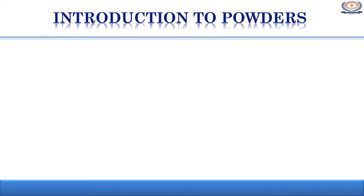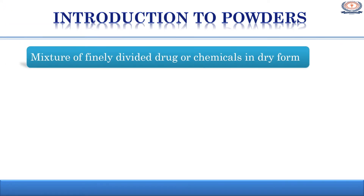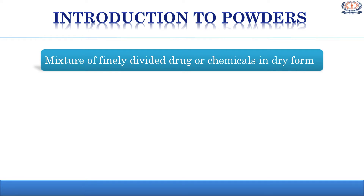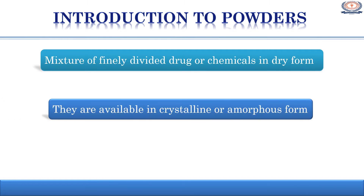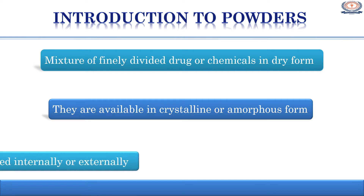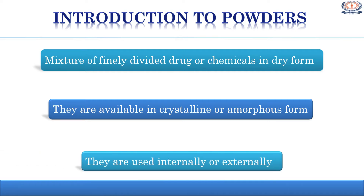Introduction to powders. A pharmaceutical powder is a mixture of finely divided drug or chemicals in dry form. These are available in crystalline or amorphous form. These are solid dosage forms of medicament which are meant for internal as well as external use. They have a very small particle size, which plays an important role in physical, chemical and biological properties of the dosage form. There is a great relationship between particle size of powder and rate of dissolution, rate of absorption, as well as therapeutic efficacy of the drug.